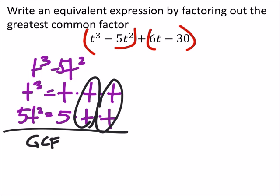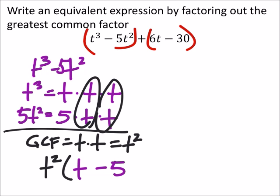So the greatest common factor for these two is t squared. Greatest common factor here is t times t, which is t squared. And so that would give us the expression t squared, and then we've got a t minus 5. Now that just came from this first two terms.